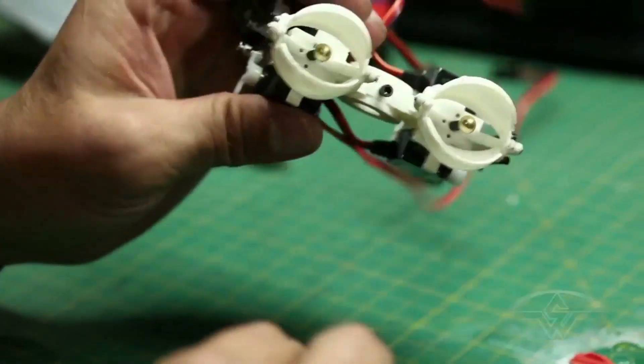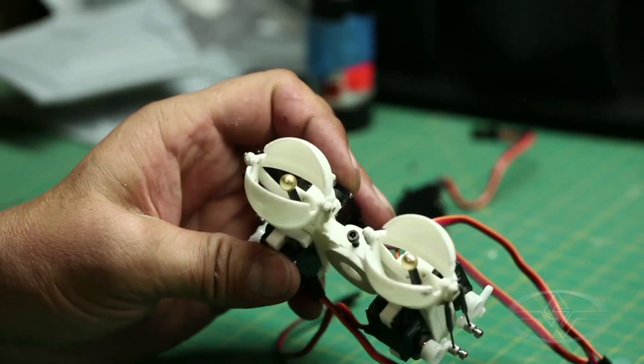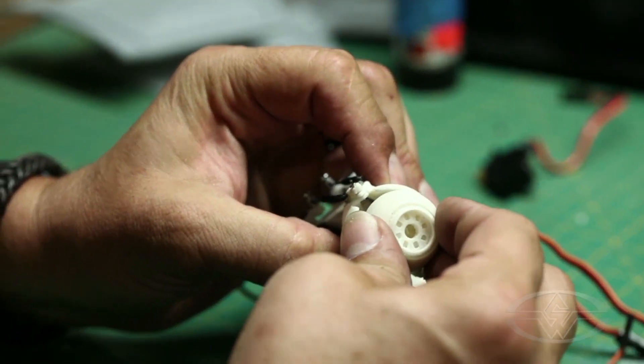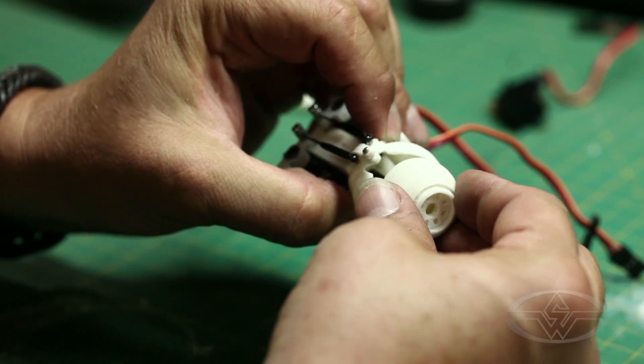So now that we have both eyes assembled with servos, we can go ahead and drop the eyeball in there. It won't fit but there's just enough stretch for it to go in there and just pop inside.